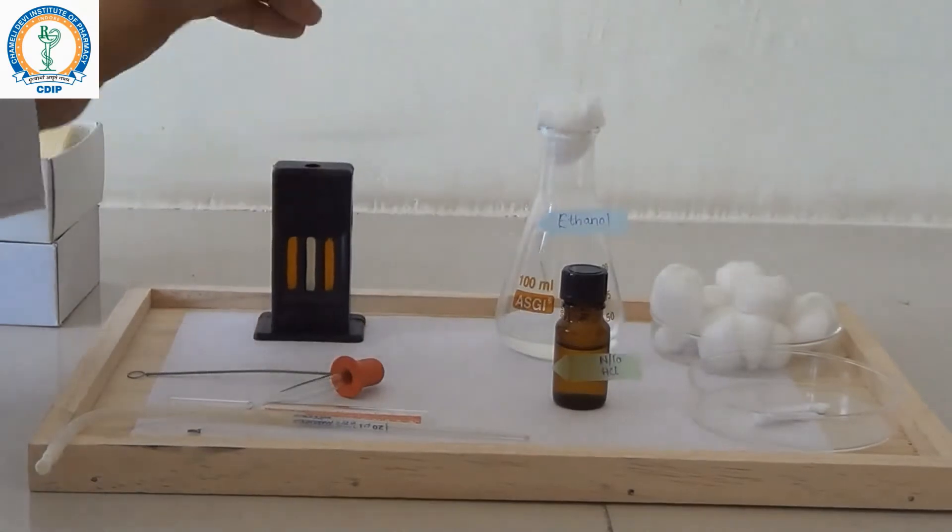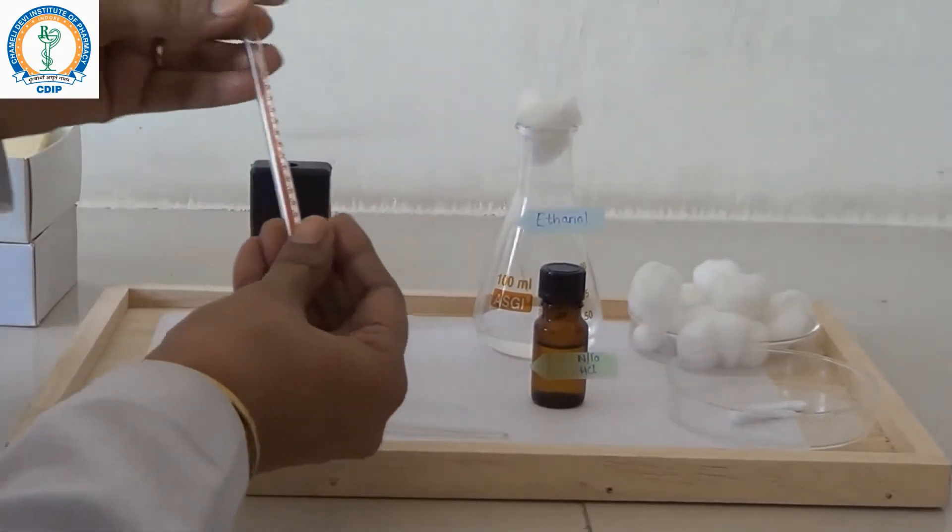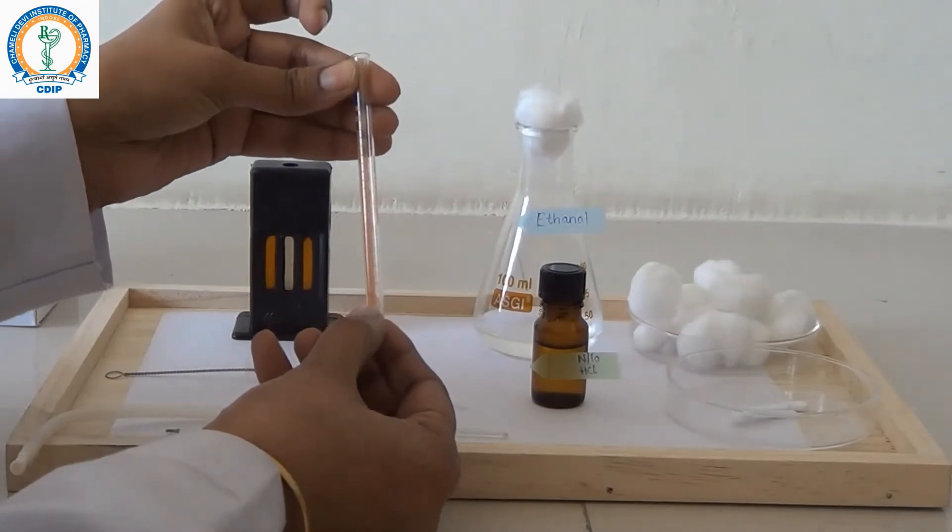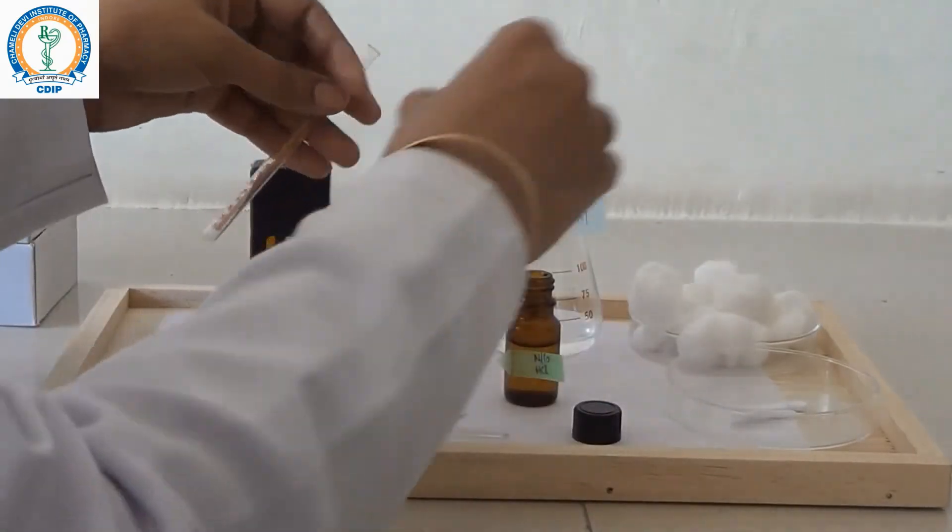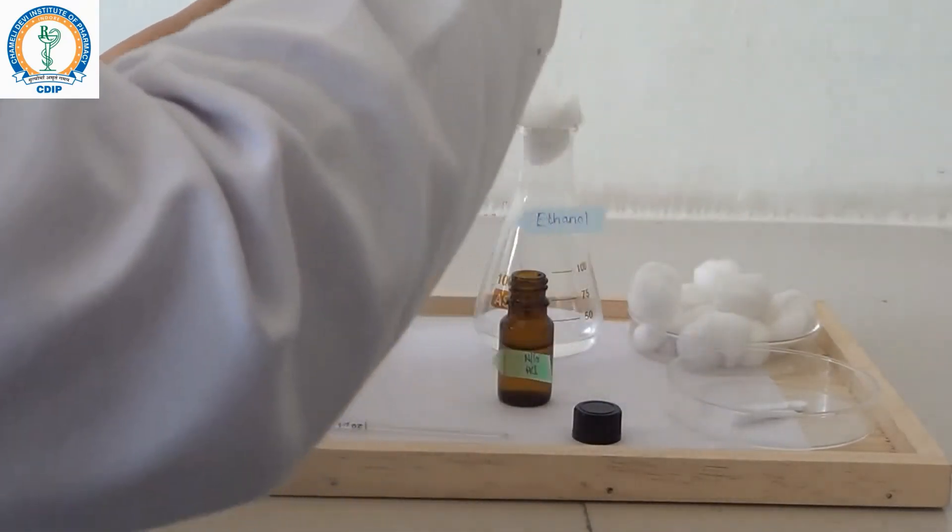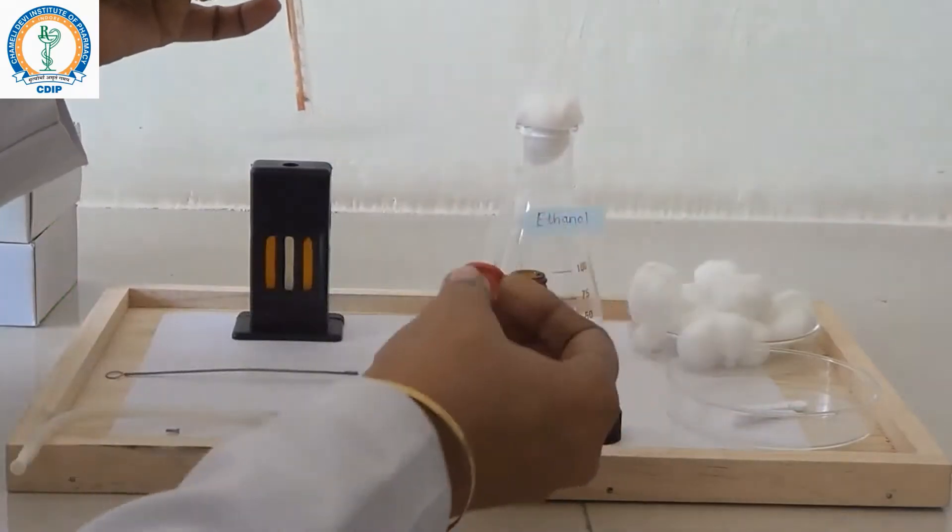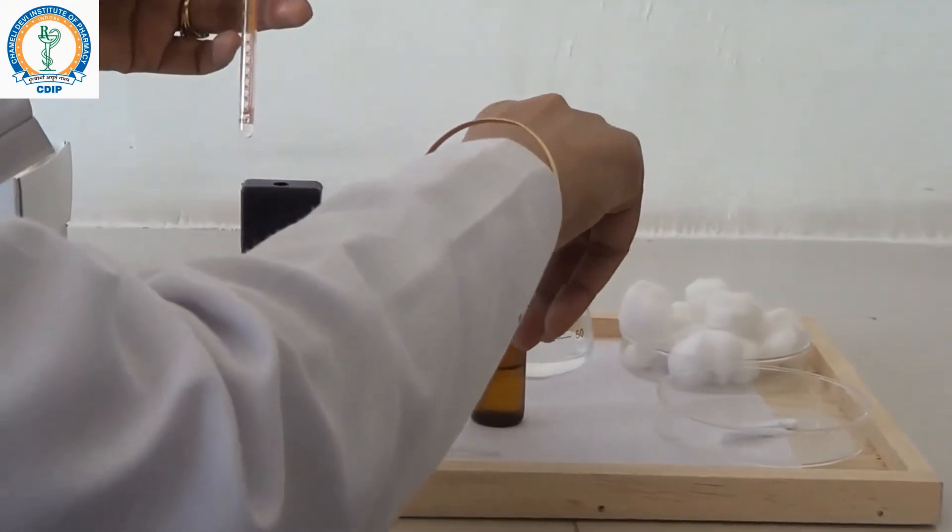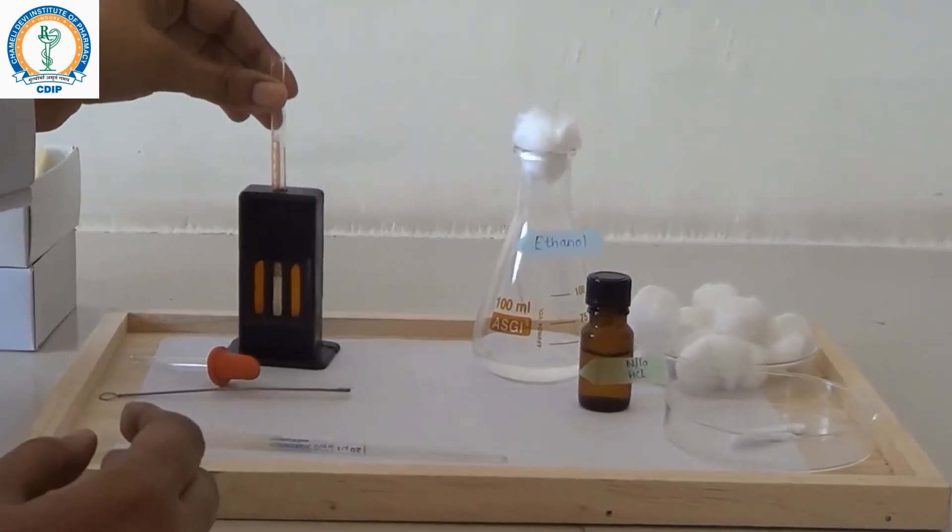Firstly, before pricking the finger with needle, we first put N by 10 HCL up to mark 2 in graduated tube with the help of dropper. Put this graduated tube for a while in the comparator stand.